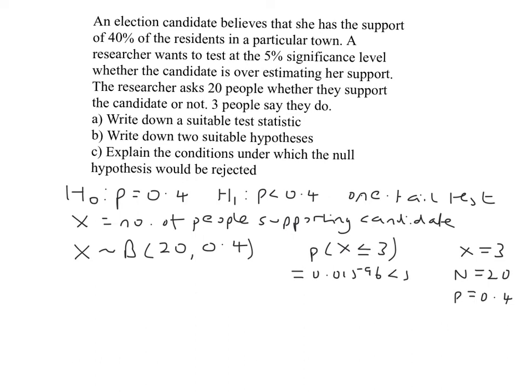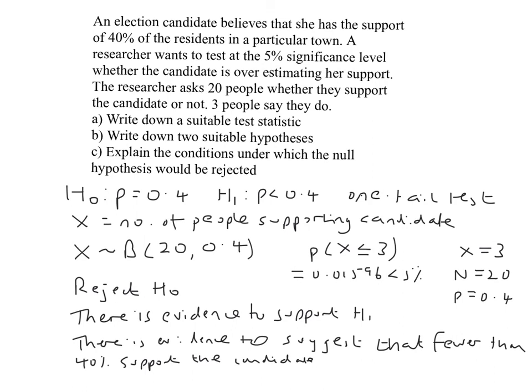0.01596 is less than 5%, which is our significance level. A probability of 5% or less is determined to be very unusual. Because of that, we can reject the null hypothesis and say there is evidence to support the alternative hypothesis — there is evidence to suggest that fewer than 40% of people support the candidate. We haven't proved it definitively, but the probabilities suggest it may be fewer than 40%.